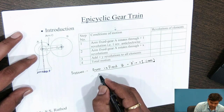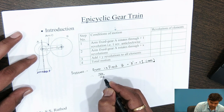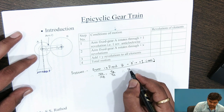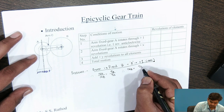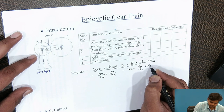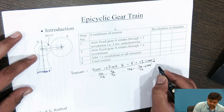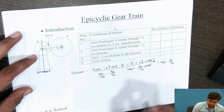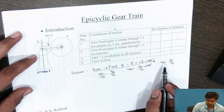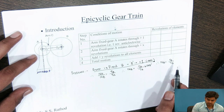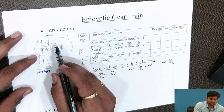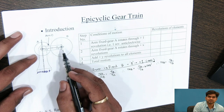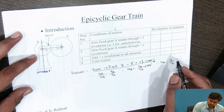We know the relation: speed of A divided by speed of B is inversely proportional to the number of teeth, giving TB by TA. Therefore, the speed of B is equal to TA by TB into NA. As gear A makes one rotation, NA equals 1, therefore NB equals TA by TB. But observe that gear A and gear B mesh externally, so if gear A rotates in the anticlockwise direction, gear B will rotate in the clockwise direction — so we get a negative term.